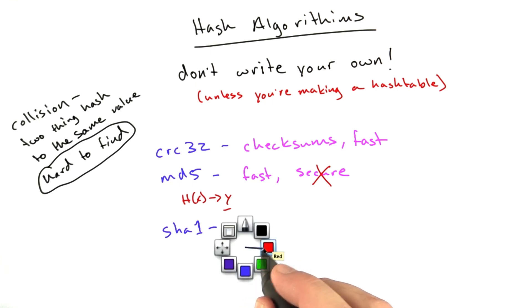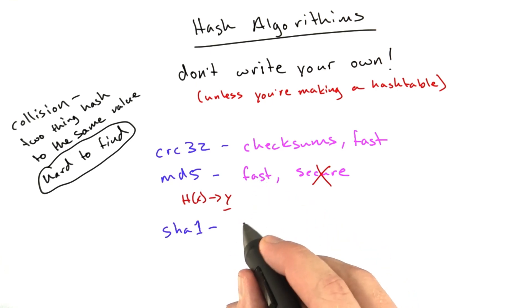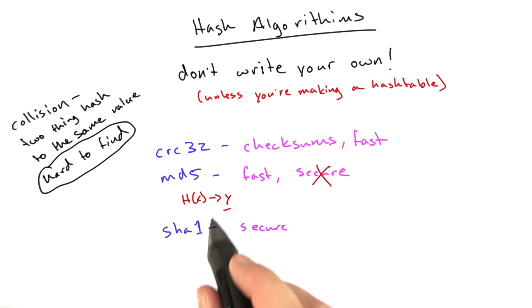The second most popular hash is called SHA-1. This is not as fast, but it's fairly secure. Just now we're starting to hear demonstrations of people finding collisions in SHA-1. It's still pretty good. It's the second most widely used hash behind MD5, but for things going forward you should really use something like SHA-256.